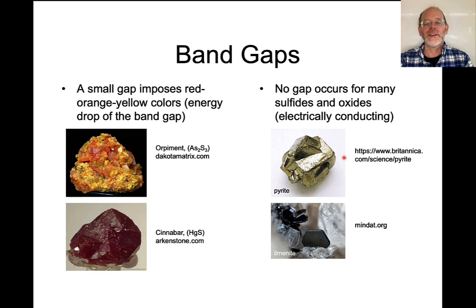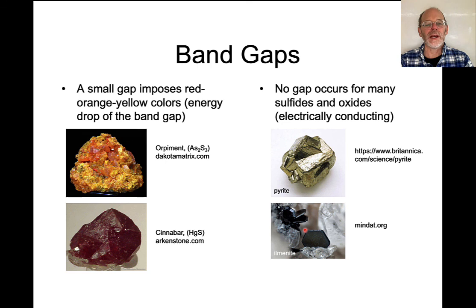Here are examples: sulfides like pyrite and oxides like ilmenite have no band gap, so they do not transmit color. But orpiment, an arsenic sulfide, and cinnabar, a mercury sulfide, do exhibit band gaps and therefore do have color.